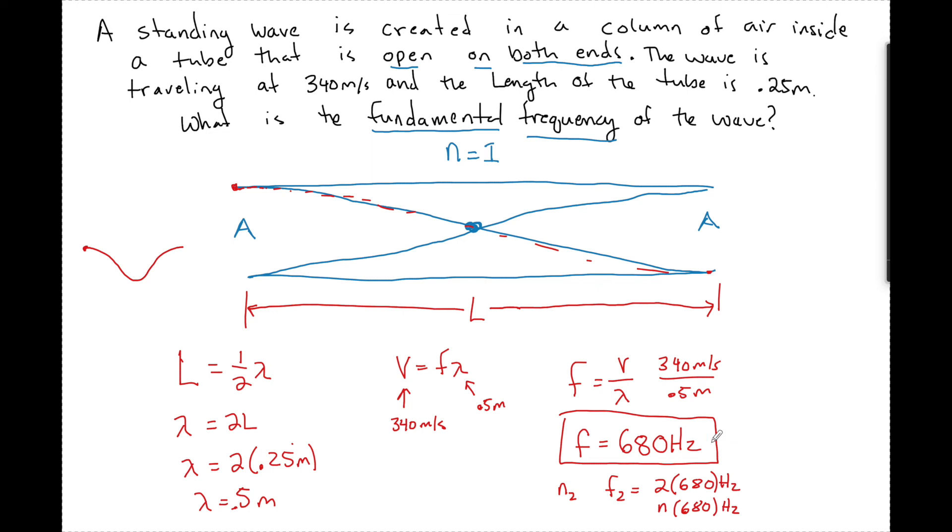And remember guys, a closed end can only have odds. So if you see a 2 here and it's a closed end tube, you know you did something wrong. But guys, this isn't hard physics. You can do the math. The math is easy. The hard part is drawing this. Getting this right is the hardest part. Once you do this, you can get to here. I promise.